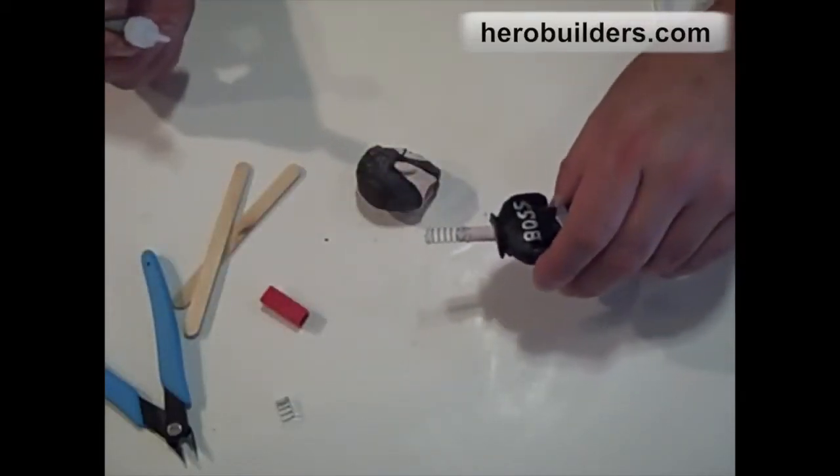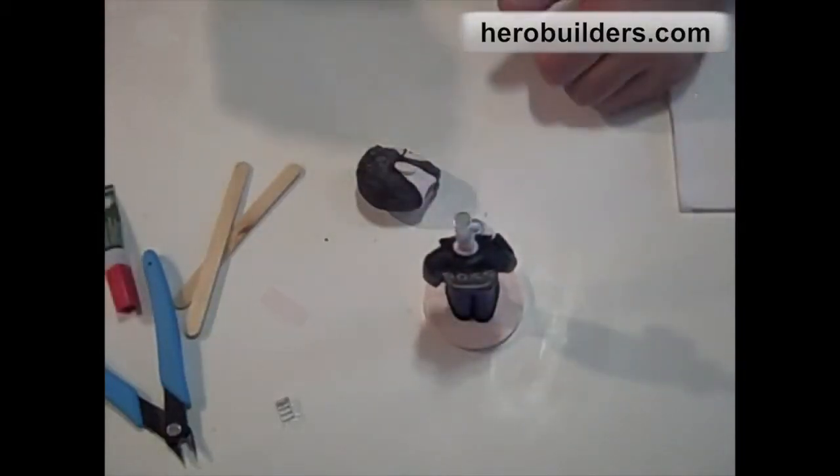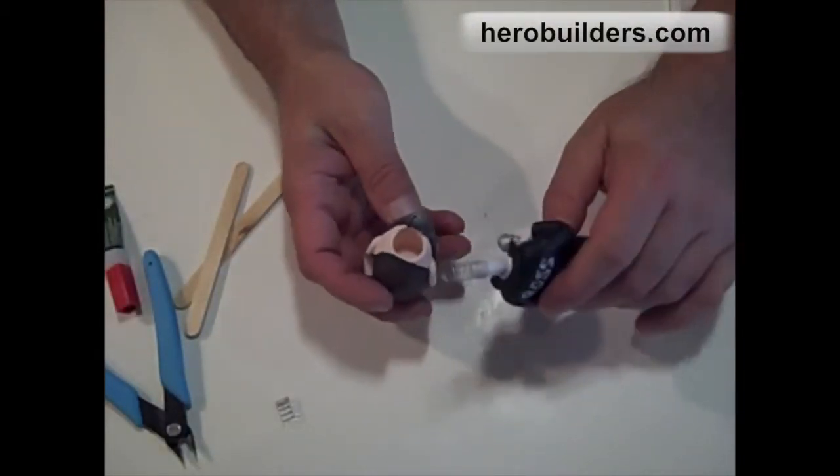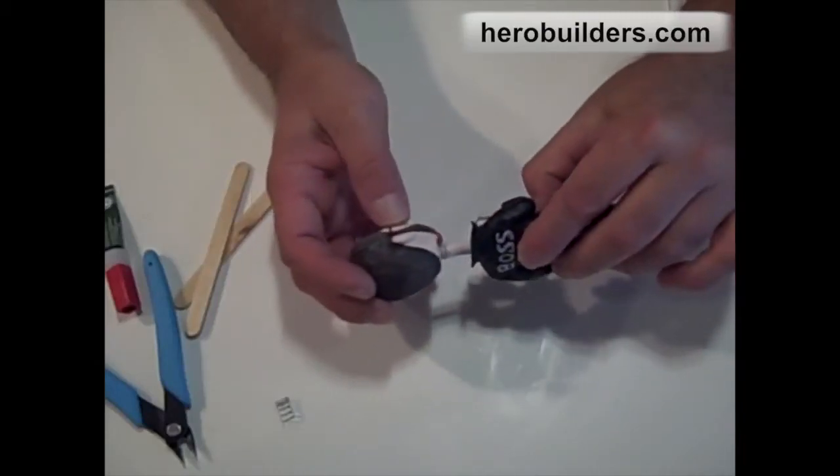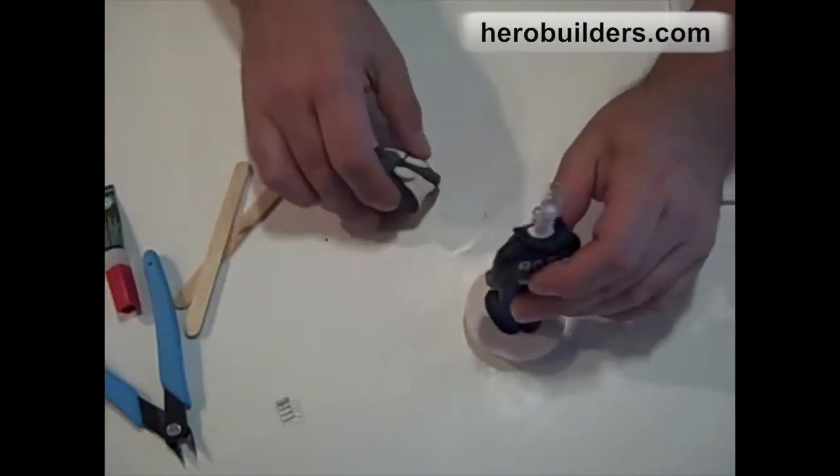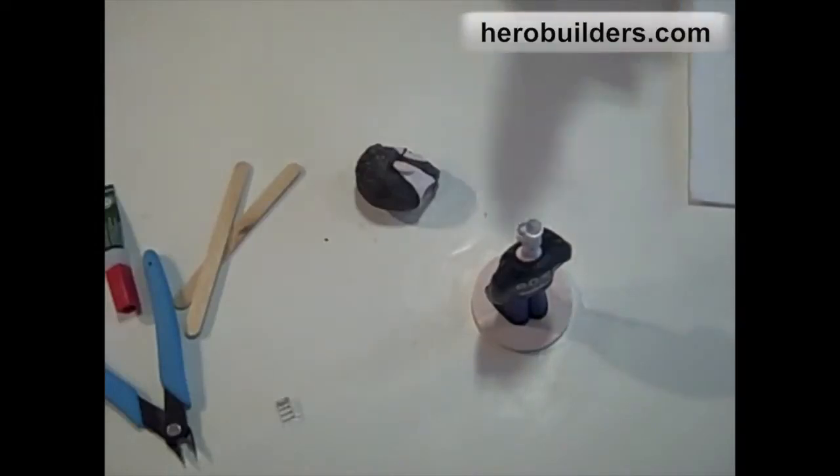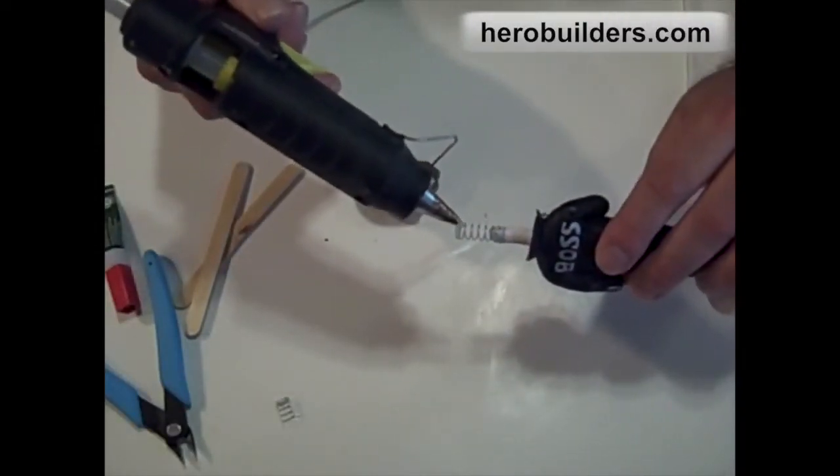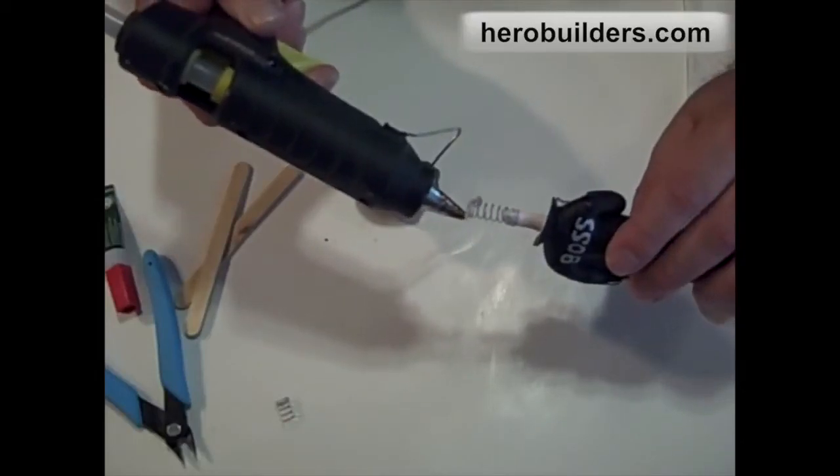Okay, we're ready to use a hot glue gun to glue the spring into the head. So it's pretty simple. What I found is the best way to do it is to add the glue to the spring. I just go around the perimeter and in the center.